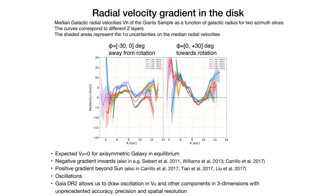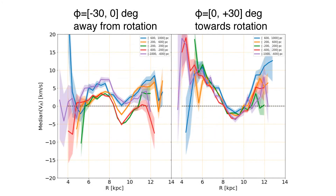One of the very nice results we get in the paper is related to the radial velocity gradient in the disk. I'm showing here a couple of plots showing the median galactic radial velocity of the giant sample as a function of radius in the galaxy for two different azimuths. The different curves correspond to different layers in z — the height above or below the disk. This radial velocity should be zero all around the galaxy if our galaxy were completely axisymmetric and in equilibrium, but around the sun, which is at eight kiloparsecs, we find a negative velocity gradient and a positive one moving to the outskirts.